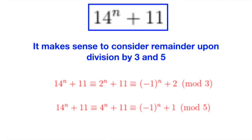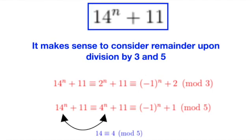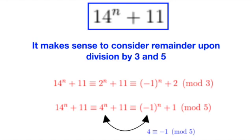Similarly, after we are done with modulo 3, we can consider the congruence now in modulo 5. Again, we use the fact that 14 is congruent to 4 modulo 5 and that 4 is congruent to minus 1 modulo 5 to justify the chain of congruences.